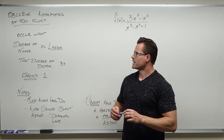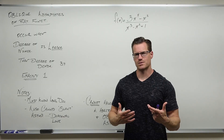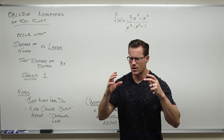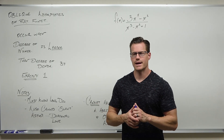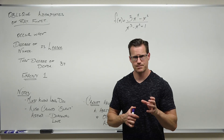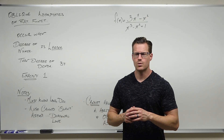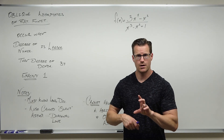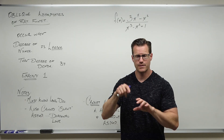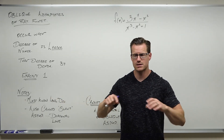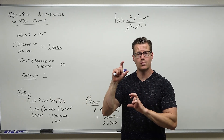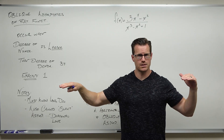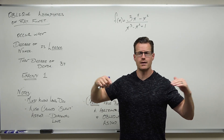Here's when you're going to have an oblique asymptote. A horizontal asymptote happens when the degree of the denominator is larger than the numerator — that's y equals zero — or equal to the numerator, which gives you a constant. The leading coefficients will tell you that.